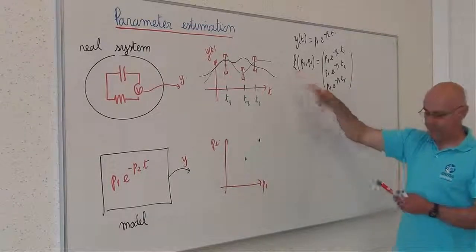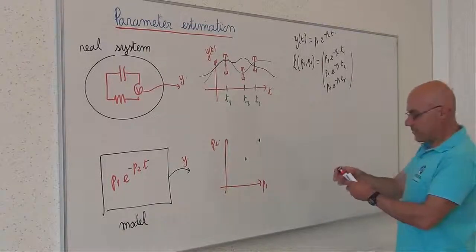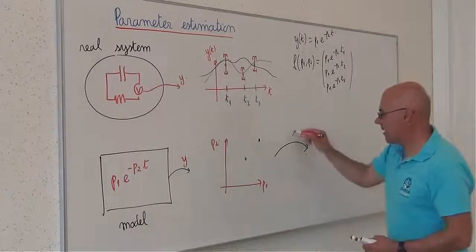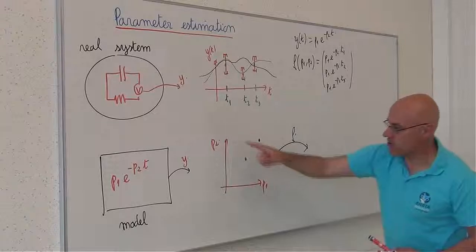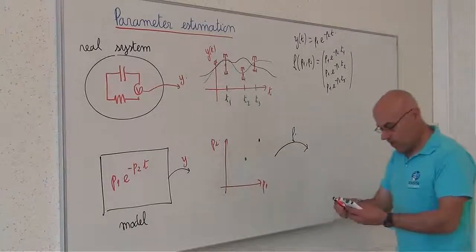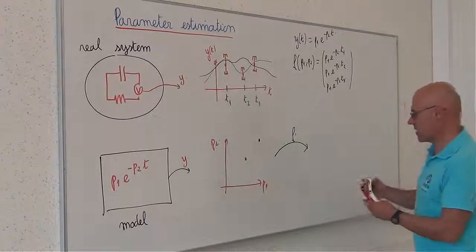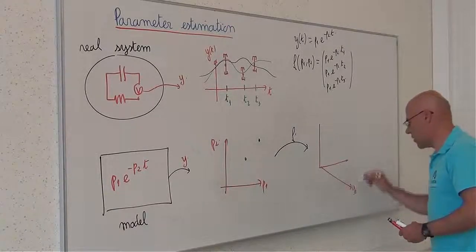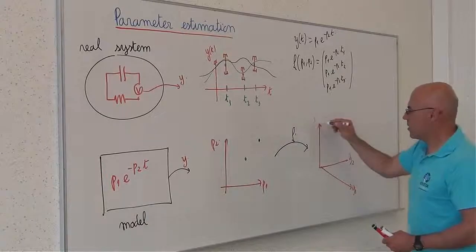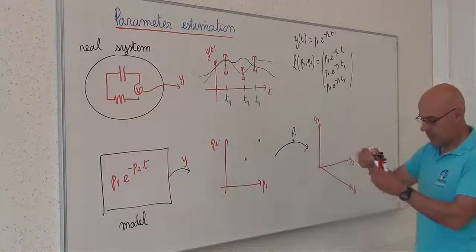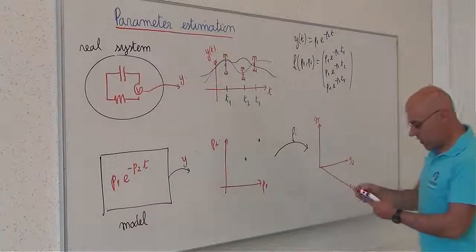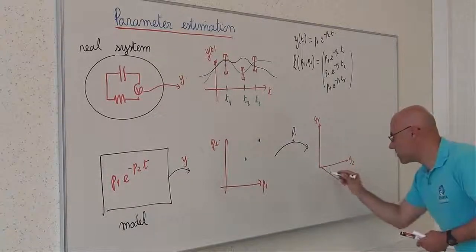This function F can be represented as a function F which maps the parameter space into the output space. So the output space is like this: Y1, Y2, Y3.